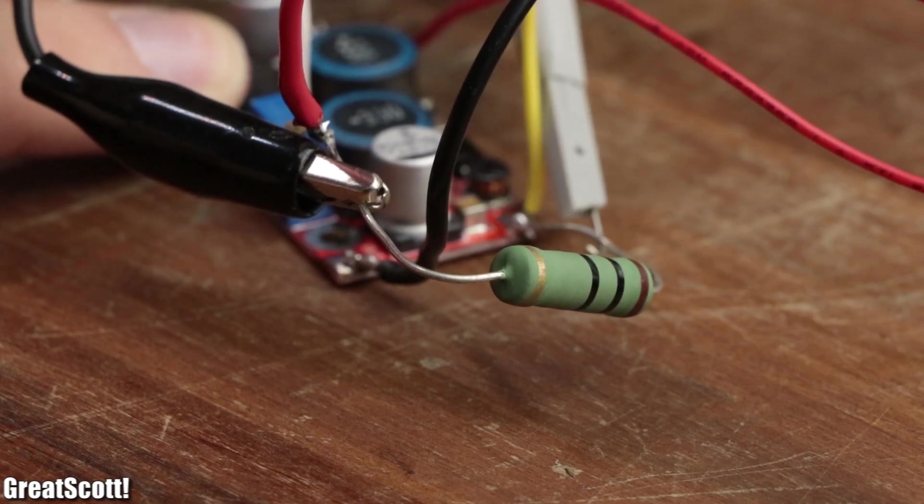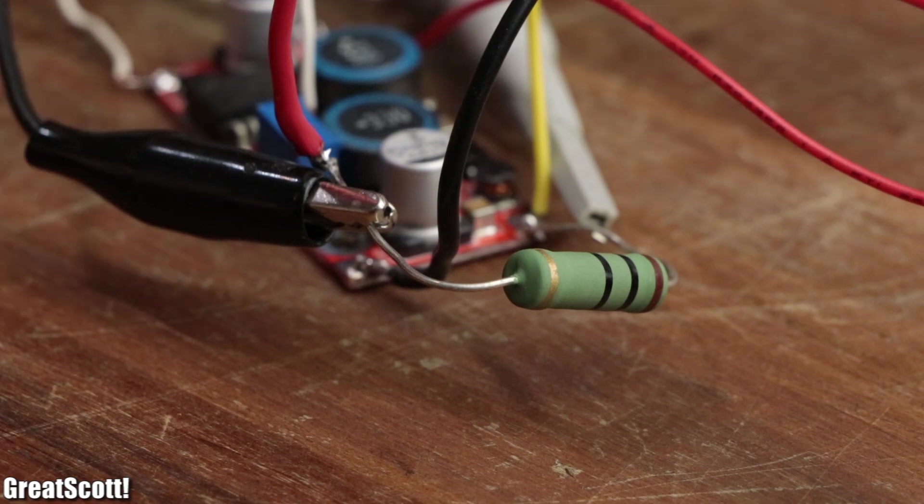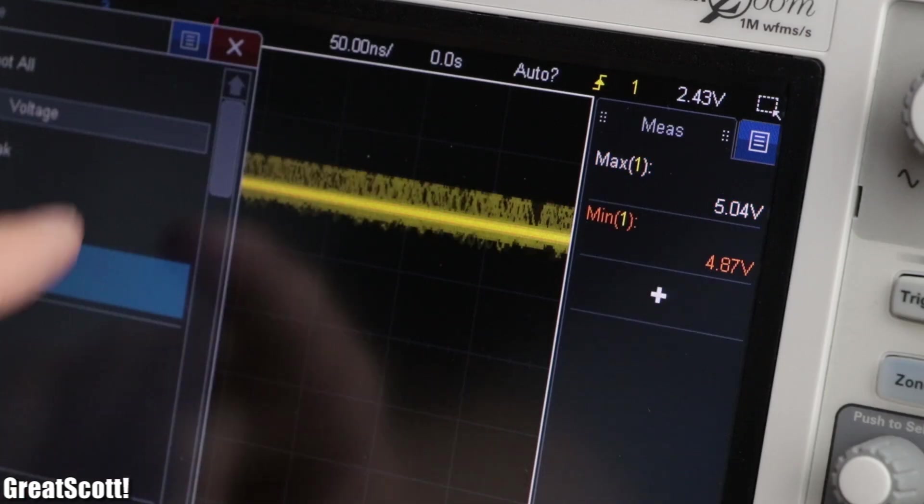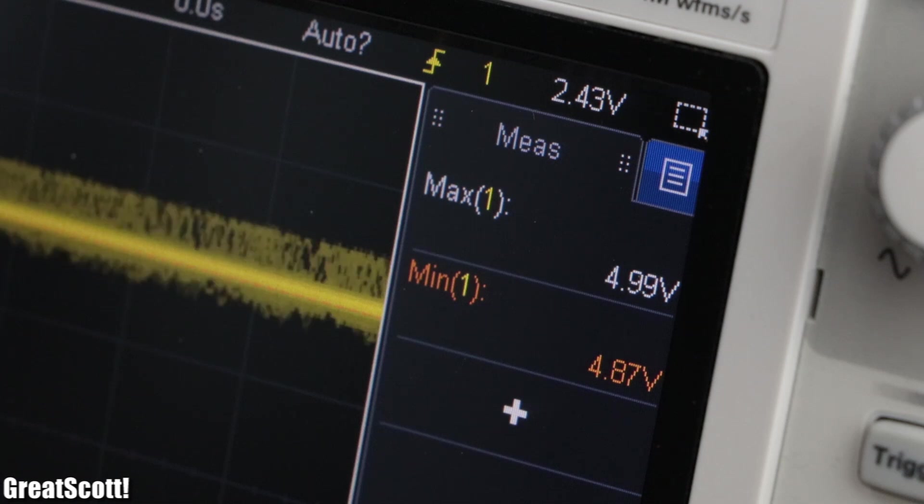This is noticeable if we look at the output voltage, which is not completely smooth but instead shows high and low points, which represents the swinging around the reference voltage.